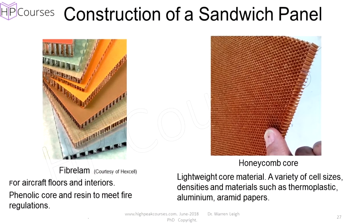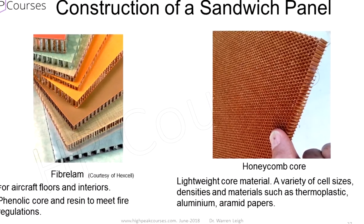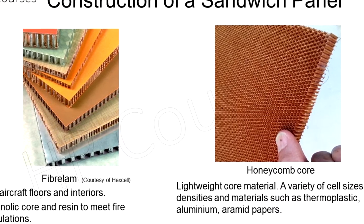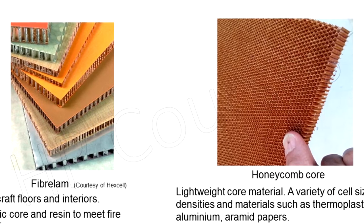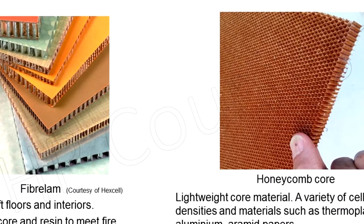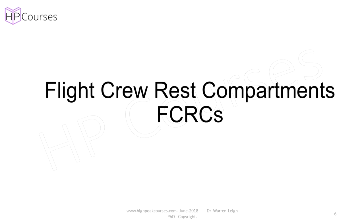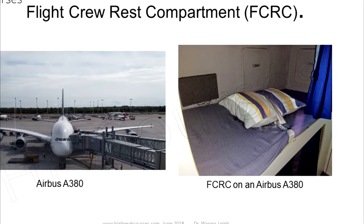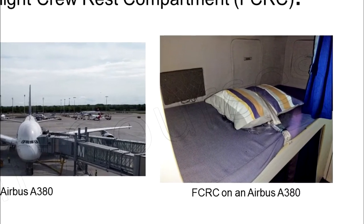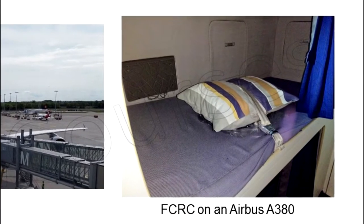All these items — all these monuments — are made from glass fibre phenolic panelling, sometimes called Fiberlam. These composite interior products meet the fire, smoke and toxicity requirements, or FST. Aircraft interior monuments also include the flight crew rest compartments. These are used on long journeys by the crew — they are like mini flat apartments, and on the A380 can contain up to 12 little crew rest compartments.